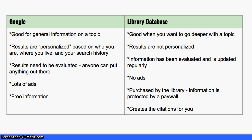Another great thing about a library database is that it has a whole bunch of tools once you're in there. One of those tools is a citation tool — the database will create the citation for you, which you can copy and paste into your bibliography. You don't have to use a third-party tool like MyBib or Citation Machine; the library database will create the citation for you.